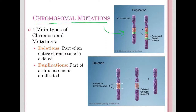There are four main types of chromosomal mutations. The first is deletions — pretty self-explanatory — where a whole part of a chromosome is deleted. You can see that down here: this pink area is broken and somehow removed, and now you get a shorter chromosome that's missing genes. Definitely a problem.